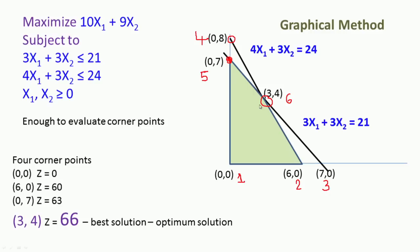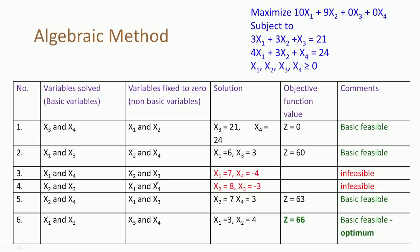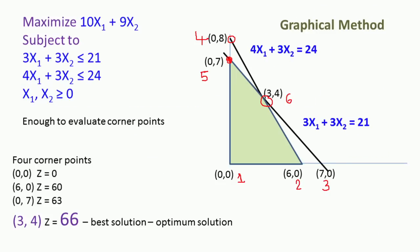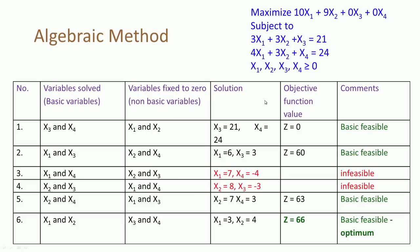From the graphical method we have already learned that points inside the feasible region need not be evaluated. This implies that in the algebraic method it is enough to fix the non-basic variables only to 0 and not to any other value. Fixing them to any other positive value evaluates points inside the feasible region, while fixing them to negative values evaluates infeasible points.